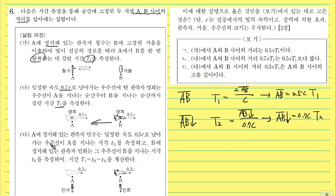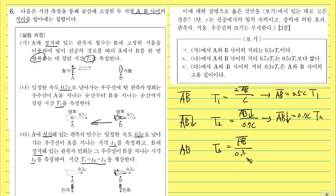다를 보게 되면, A에 정지해 있는 관측자 민수는 일정한 속도 0.3C로 날아가는 우주선이 A를 지나는 시각 TA를 측정하고, B에서 정지해 있는 관측자 민희는 그 우주선이 B를 지나는 시각 TB를 측정해서 시간 간격 T3를 계산했습니다. 민수나 민희나 AB는 움직이지 않으니까 정상이에요. 따라서 다에서 AB 길이는 0.3C × T3로 표현할 수 있겠습니다.